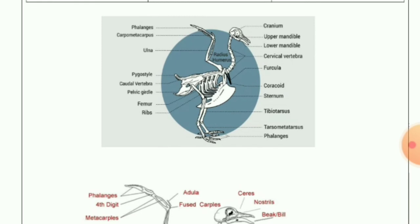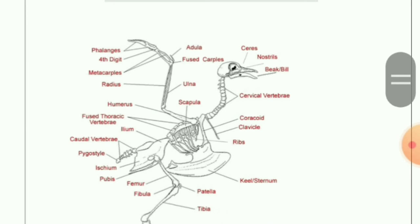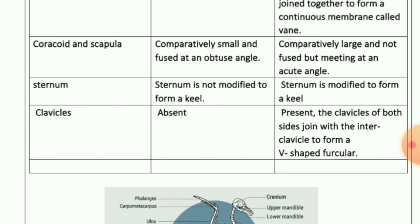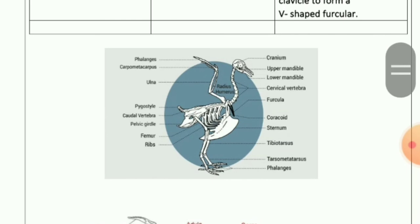The next character is the sternum or keel. You can see in the picture the sternum is boat-shaped. In Ratitae, the sternum is not modified to form a keel. In Carinate, the sternum is modified to form a keel, which is the structure that helps in flying.